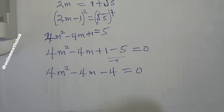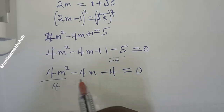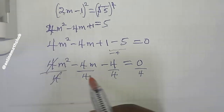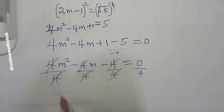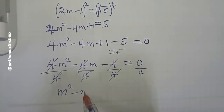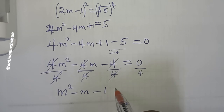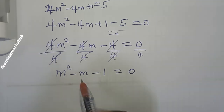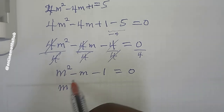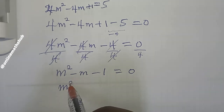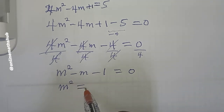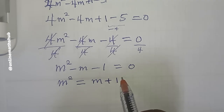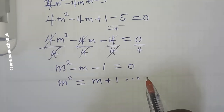I can divide through by 4 since all terms contain 4. The equation becomes m² − m − 1 = 0. I can then rearrange to make m² the subject, pushing the remaining terms to the right-hand side: m² = m + 1. I'll label this result as star for reference.